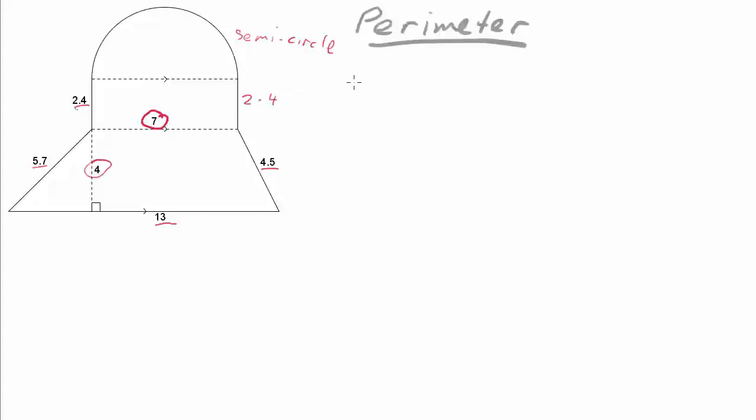So as a preliminary calculation, our perimeter will be, starting over with our two point four. So we've got two point four plus five point seven plus thirteen plus four point five plus two point four plus a semicircle, which we'll need to calculate in a moment. And that comes to twenty eight units plus whatever we calculate our semicircle to be.